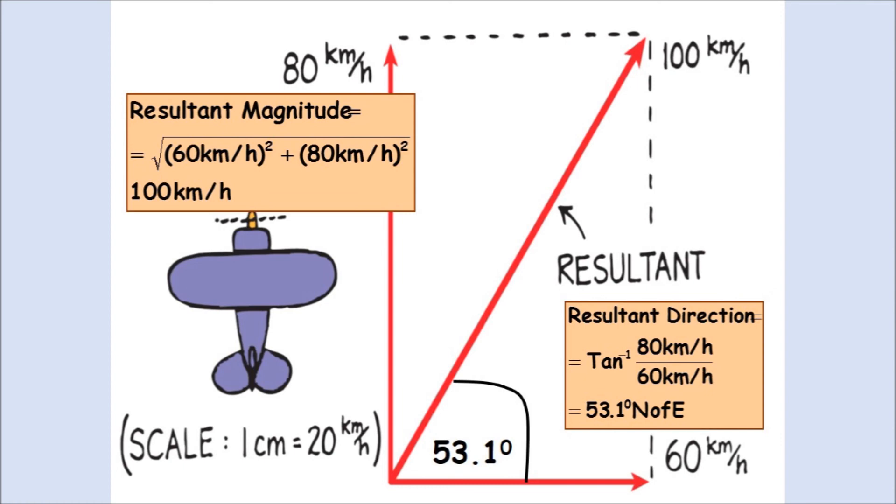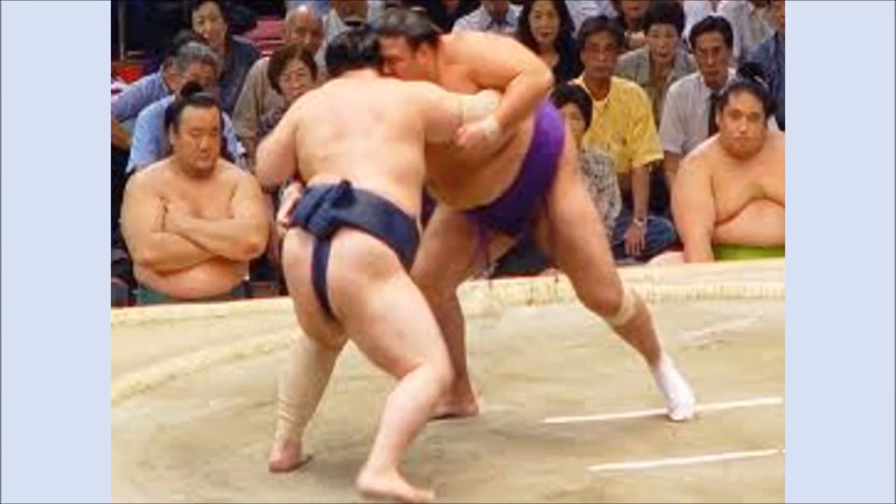Here I have a quick example where I have two vectors. I have 80 kilometers per hour north, and I have 60 kilometers per hour east, and then I have the resultant.